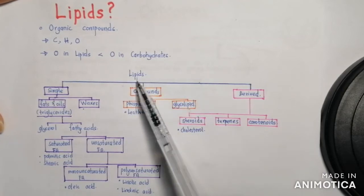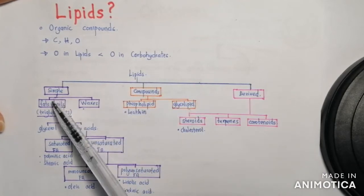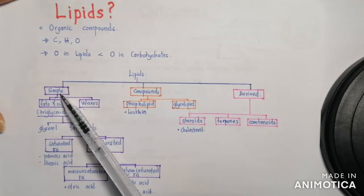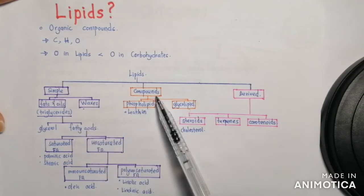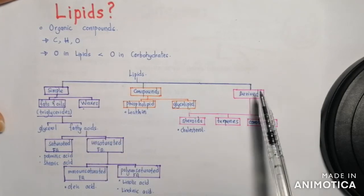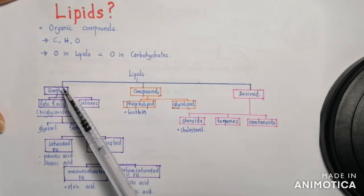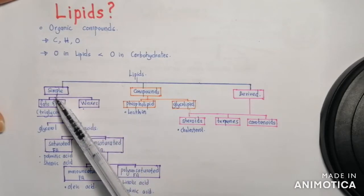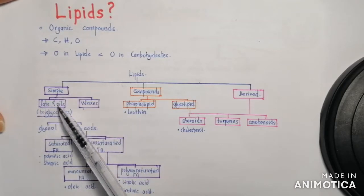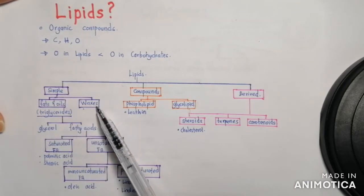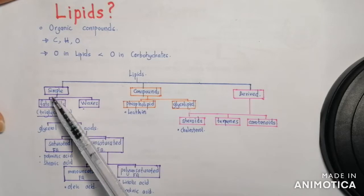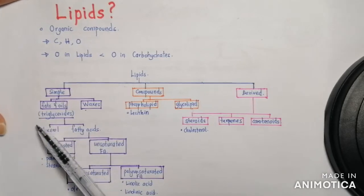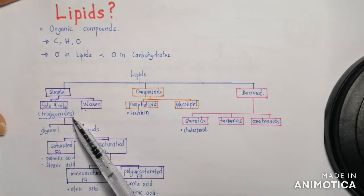Lipids can be classified into three categories: simple lipids, compound lipids, and derived lipids. In simple lipids, we have two types: fats and oils, and waxes. An example of fats and oils are triglycerides.